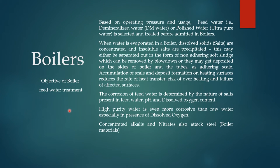Now we can see the objective of boiler feed water treatment. Based on the operating pressure and usage of the boiler, demineralized (DM) water, polished water, or ultra-pure water is selected and treated before being admitted to the boiler. For steam turbines, polished water is normally used, which has very low silica — less than 0.02 ppm — and very low conductivity. DM water is used in boilers for process service.